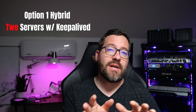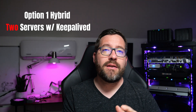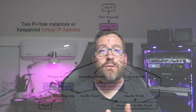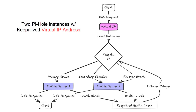There's also another configuration I'm calling a hybrid option — a hybrid of option one. I've run this before and know many others who do as well. This includes using two Pi-hole servers configured with Keepalived, which creates a virtual IP address. Once that VIP is created, you designate one server as the primary and the other as secondary. The primary always receives client traffic unless something happens to it or you take it down for maintenance, at which point Keepalived shifts that traffic to the secondary node. You hand out just a single IP address to clients via manual config or DHCP, and they use that one address regardless of which server is primary or secondary.